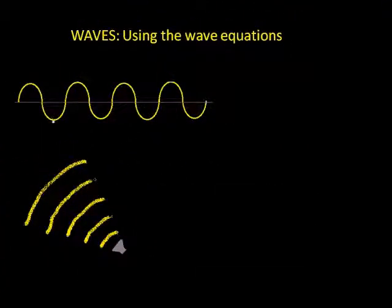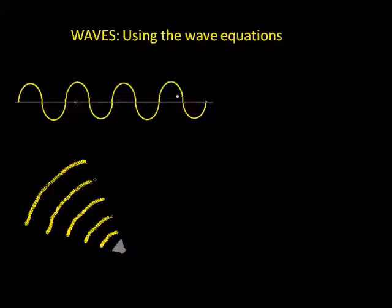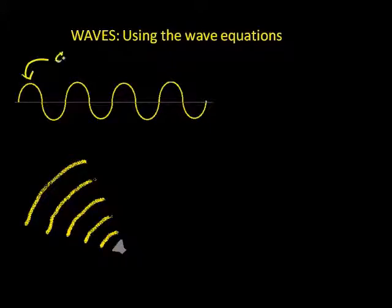Now we'll talk about some very basic wave nomenclature — parts of the wave. We'll start with the transverse wave. The top of the wave, the highest point in the wave, is called the crest.